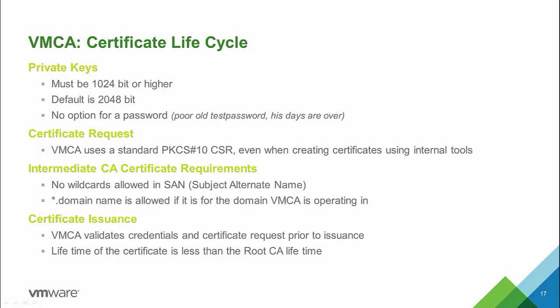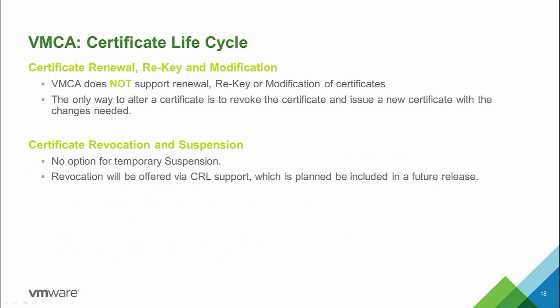The intermediate CA itself is not allowed to have a wildcard in the subject alternate name, though you can use a wildcard for the domain name if the VMCA is operating in that domain. The VMCA validates credentials and the certificate with signing requests prior to issuance. The lifetime of these certificates will always be less than the root CA lifetime. We do not support renewal, rekeying, or modification of certificates. The only way to alter a certificate is to revoke it and issue a new one. Revocation will be offered in a future release via CRLs, with no option for temporary suspension.